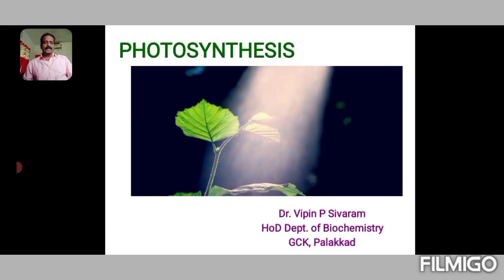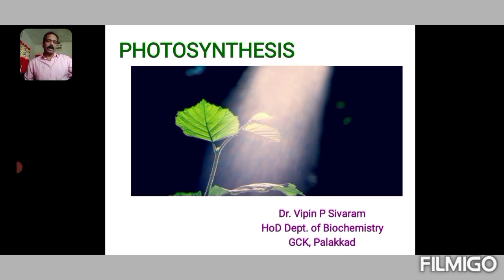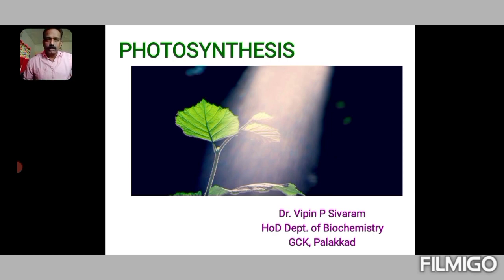We will be discussing the chemistry of photosynthesis in this video class, divided into two modules. Photosynthesis is a process which occurs in green plants, algae, photosynthetic bacteria, and some organisms like Euglena. Its role is to trap solar energy and use this to drive the synthesis of carbohydrate from carbon dioxide and water, with release of oxygen as a by-product. It is the only process in the universe by which solar energy is trapped and preserved as chemical energy in organic molecules.